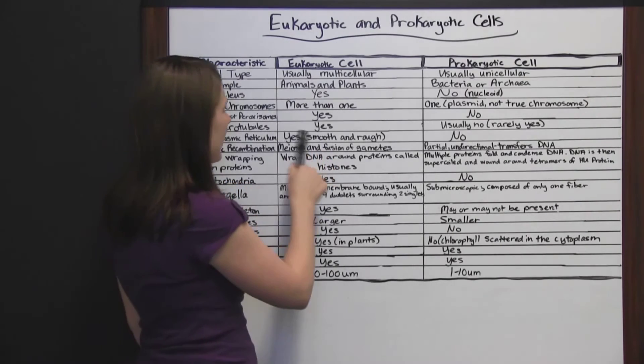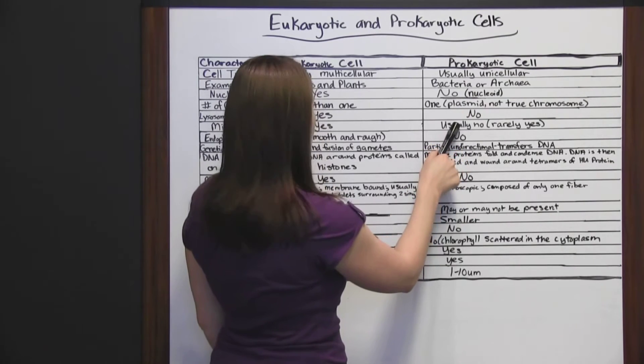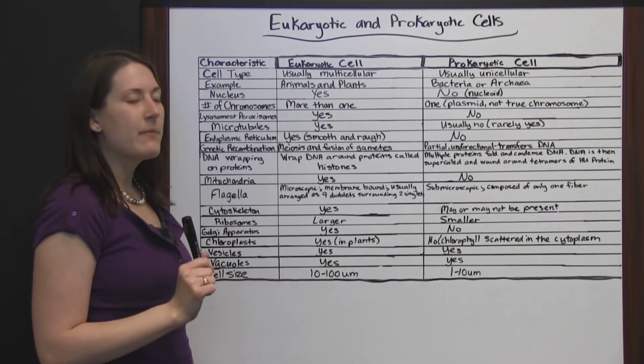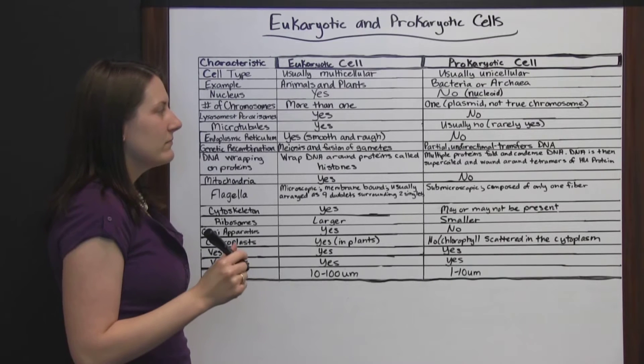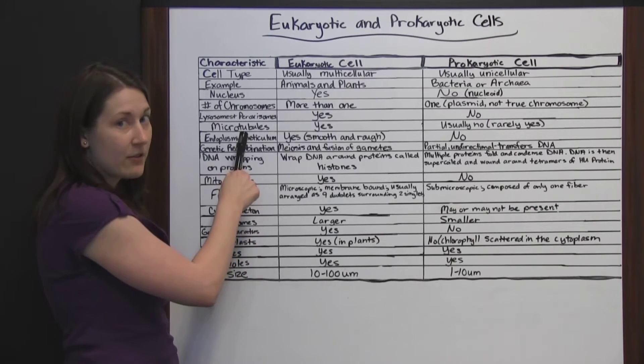Microtubules. Yes, eukaryotic cells have them. Usually, no on the prokaryotic cell, but rarely they will have microtubules, but it's very rare. It's more likely that you'll come across a prokaryotic cell that will not have microtubules.